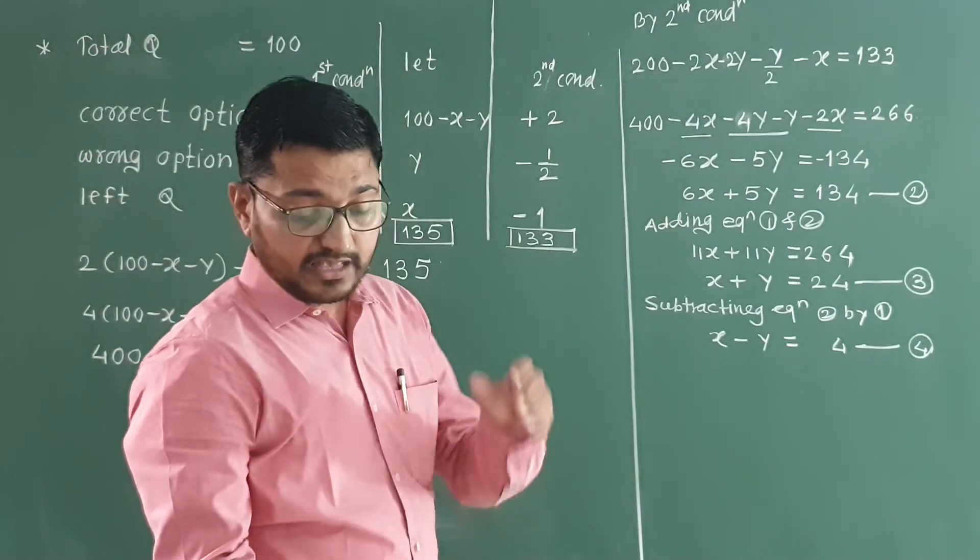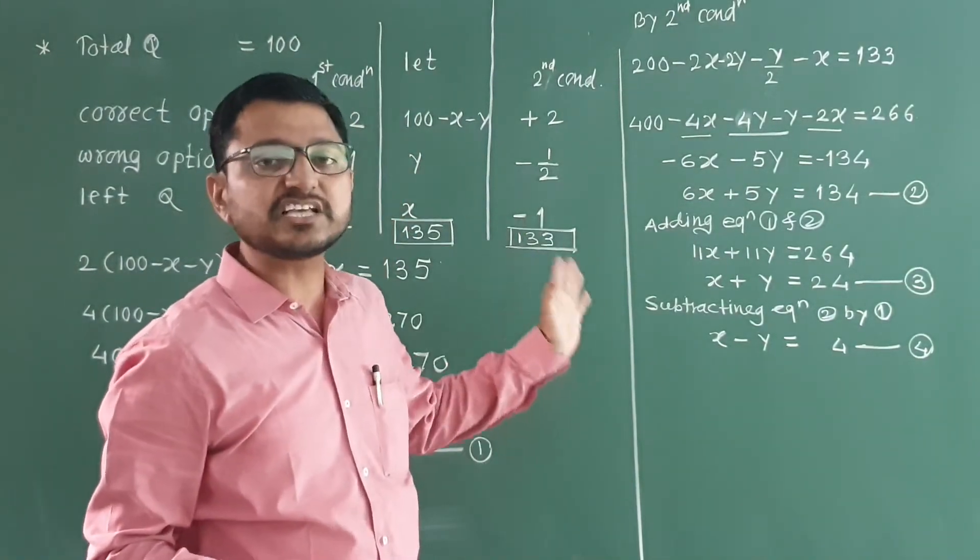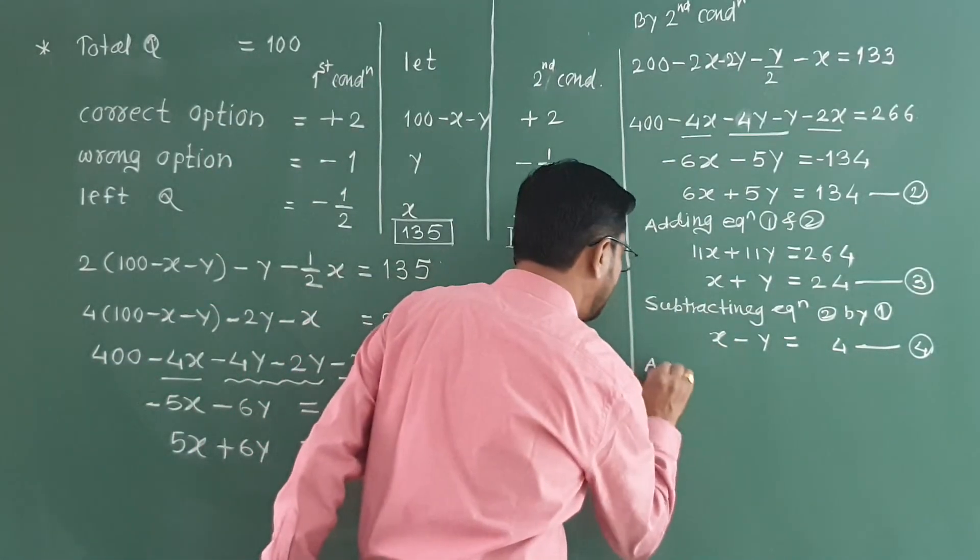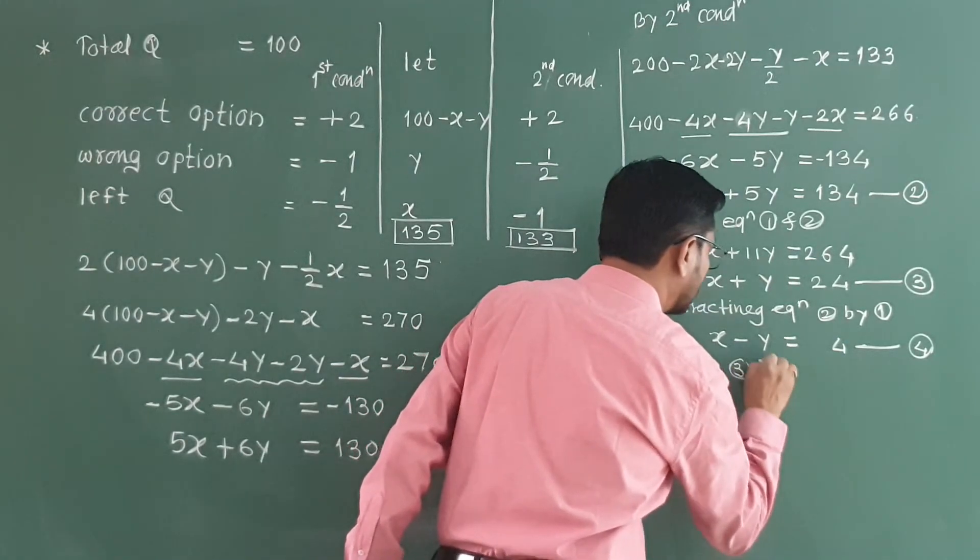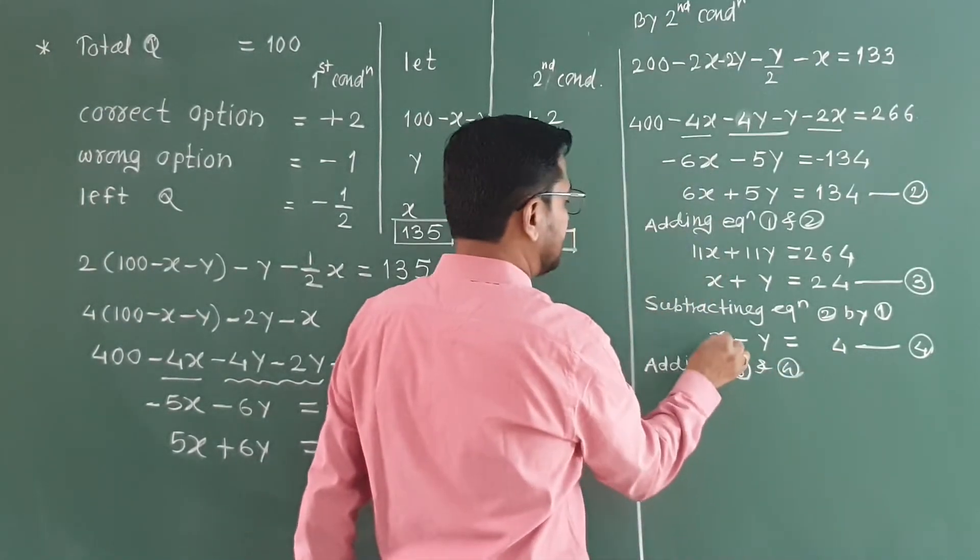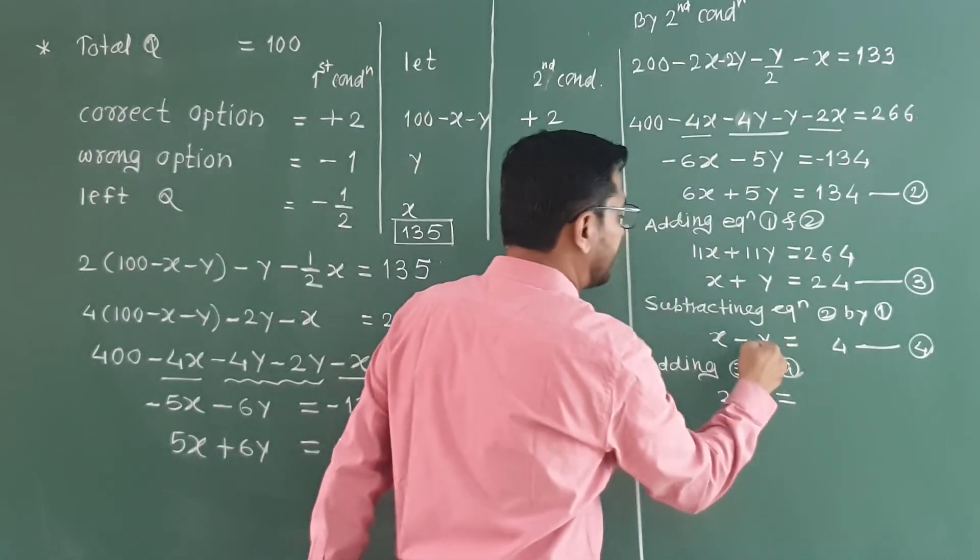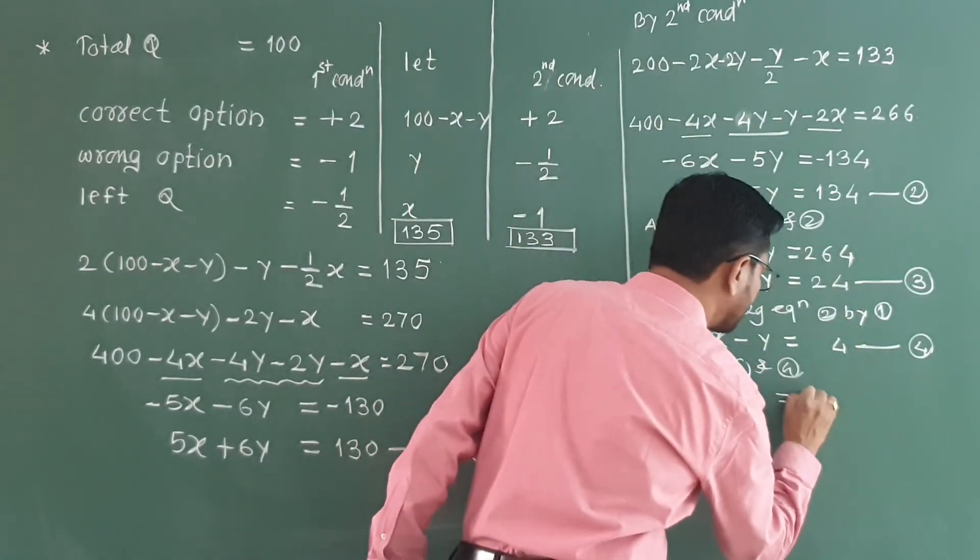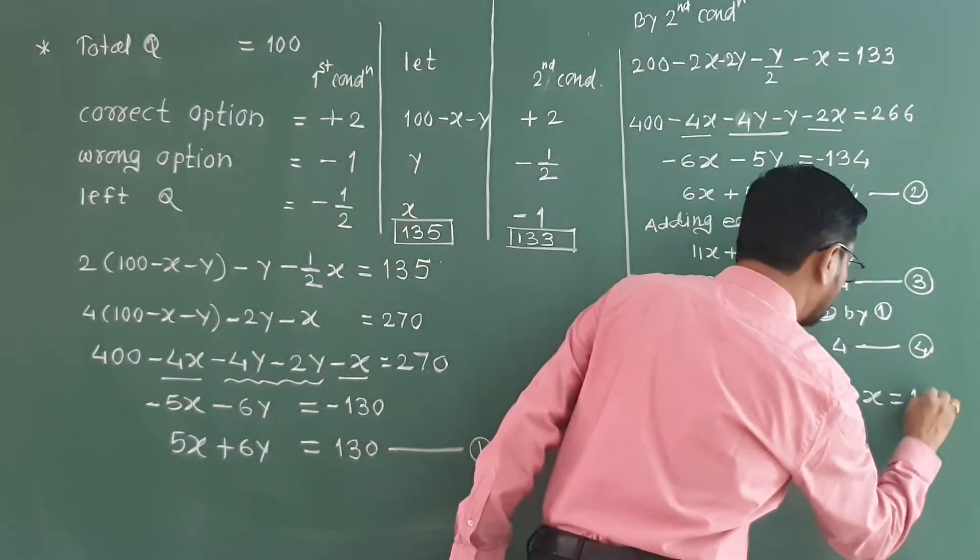Adding equations 3 and 4, we get 2x, y cancels. 24 plus 28, and therefore x is equal to 14.